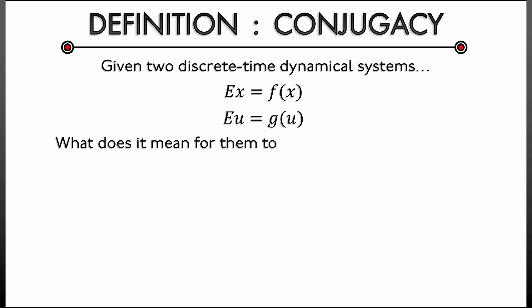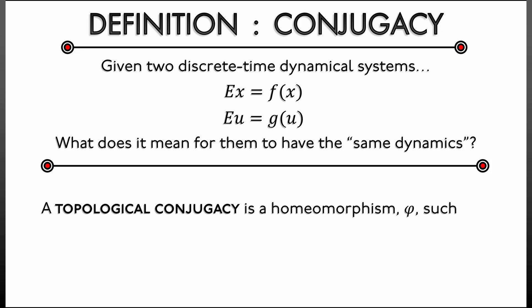does it mean for these two systems to have the same dynamics? Mathematicians use the following definition: a topological conjugacy is a homeomorphism φ such that φ ∘ f = g ∘ φ. And if such a φ